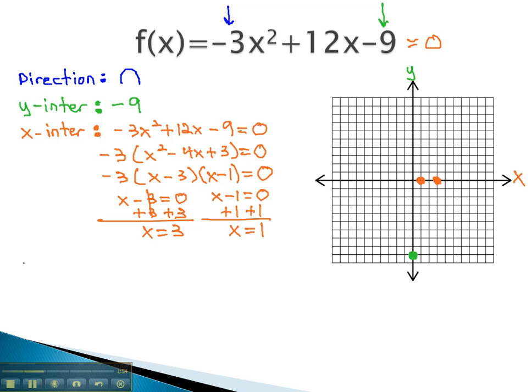The only key point left to find is the vertex. We decided the vertex could be found by first finding the x-coordinate at the opposite of b over 2a.